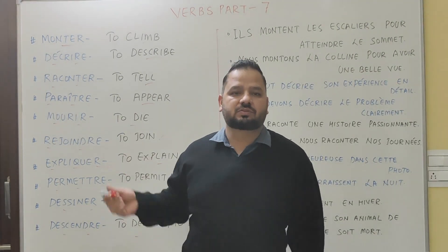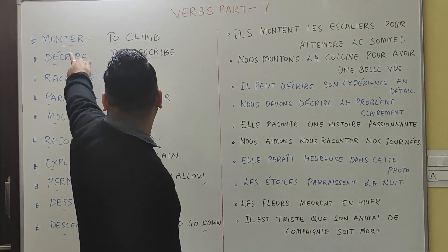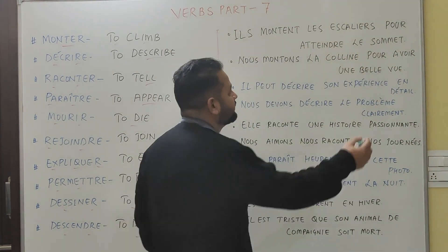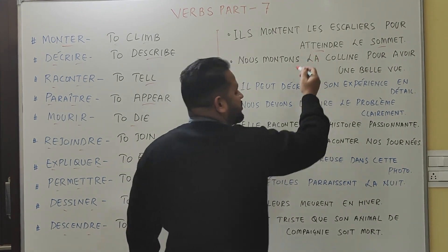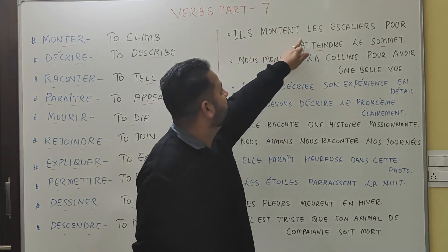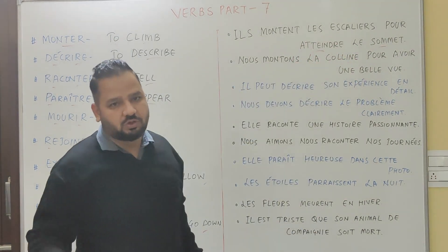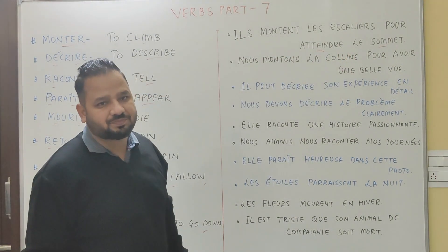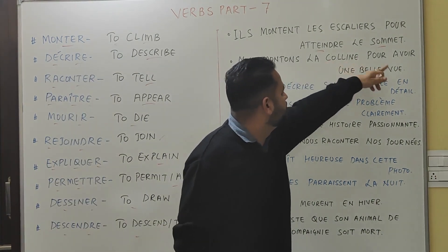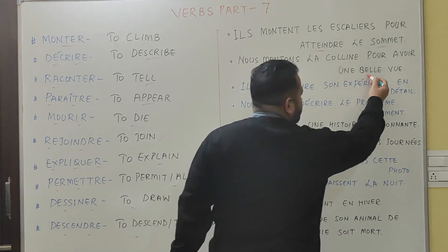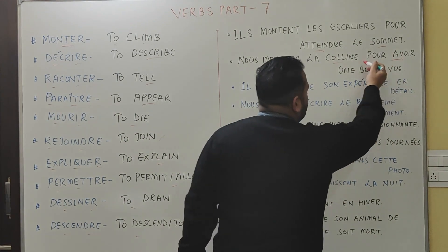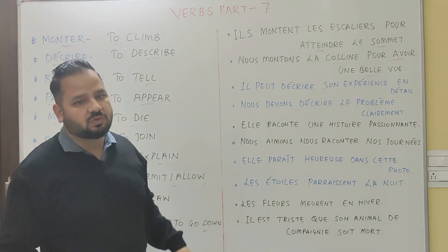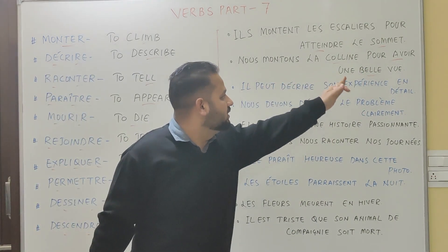Let's discuss these verbs with the help of examples. First one: 'monter'. 'Ils montent les escaliers pour atteindre le sommet.' - They climb the stairs to reach the top. 'Sommet' means top, 'atteindre' means to achieve or to reach. Another example: 'Nous montons la colline pour avoir une belle vue.' - We climb the hill to have a nice, beautiful view.